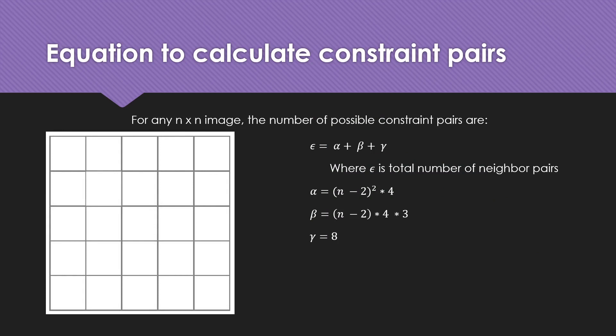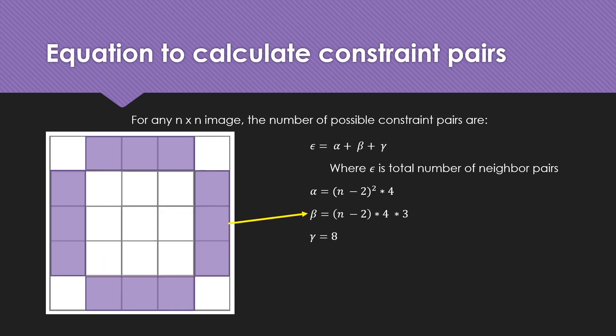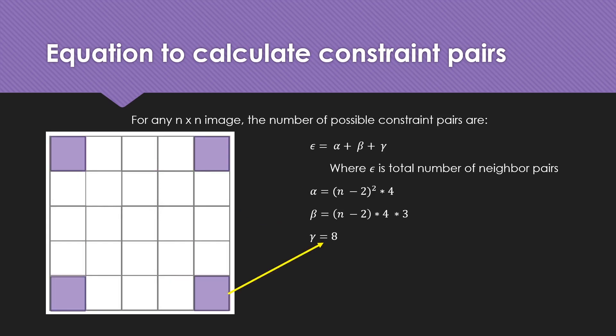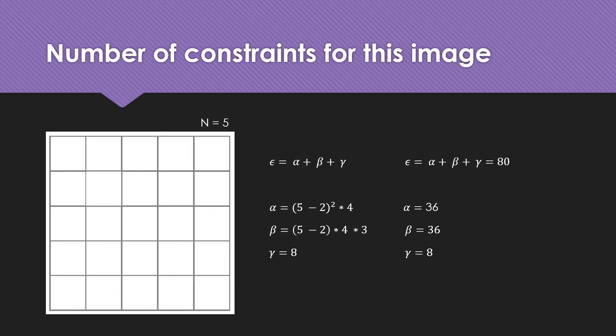For any n-by-n image, we defined epsilon as the equation alpha plus beta plus gamma, where alpha represents the number of unique constraint pairs in the central region excluding border tiles, beta represents constraint pairs for all border tiles excluding corners, and gamma represents constraint pairs for just the corner tiles. In this case with n equal to 5, calculating epsilon gives us a result of 80 total constraint pairs.